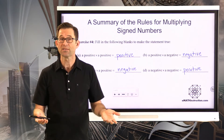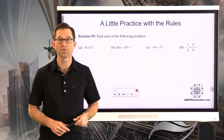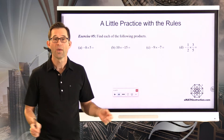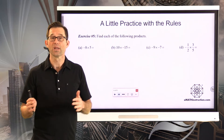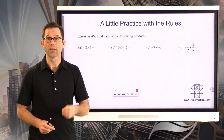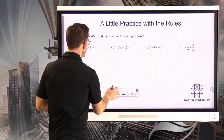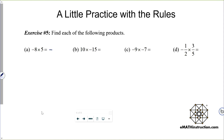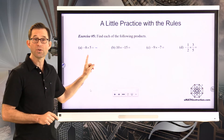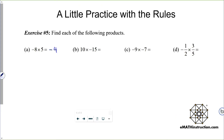Let's get some practice — exercise number 5: find each of the following products. For letter A, negative 8 times positive 5: since one number is negative and one is positive, the result must be negative. We know 8 times 5 is 40, so negative 8 times positive 5 is negative 40.